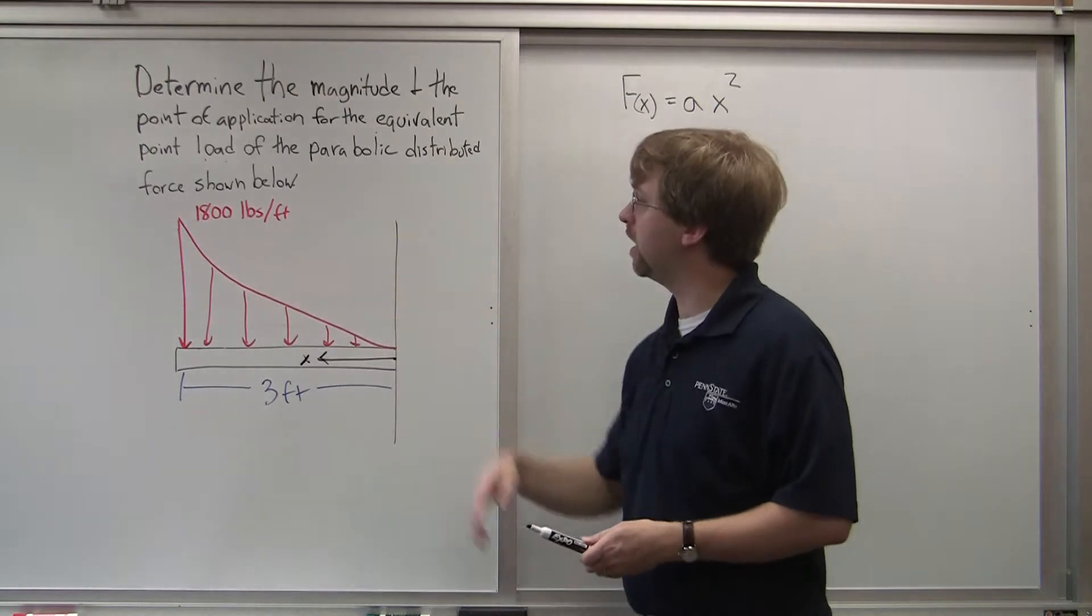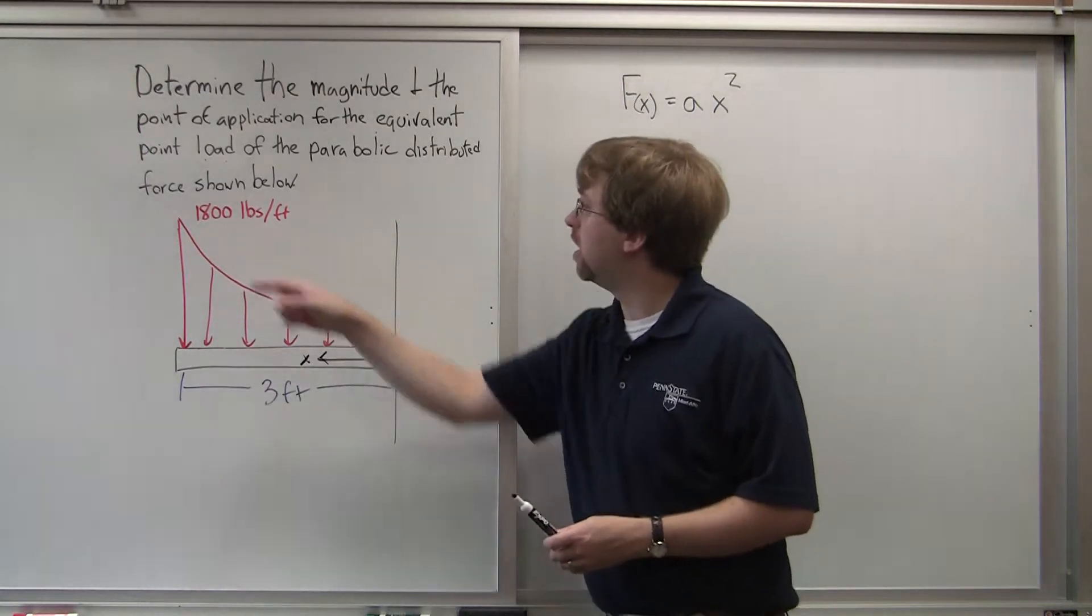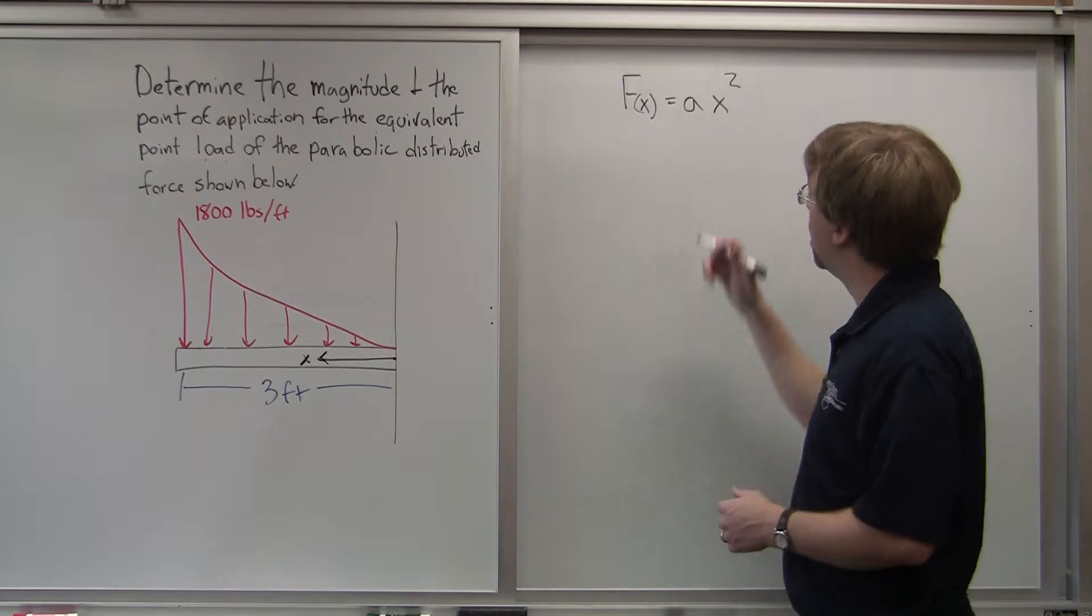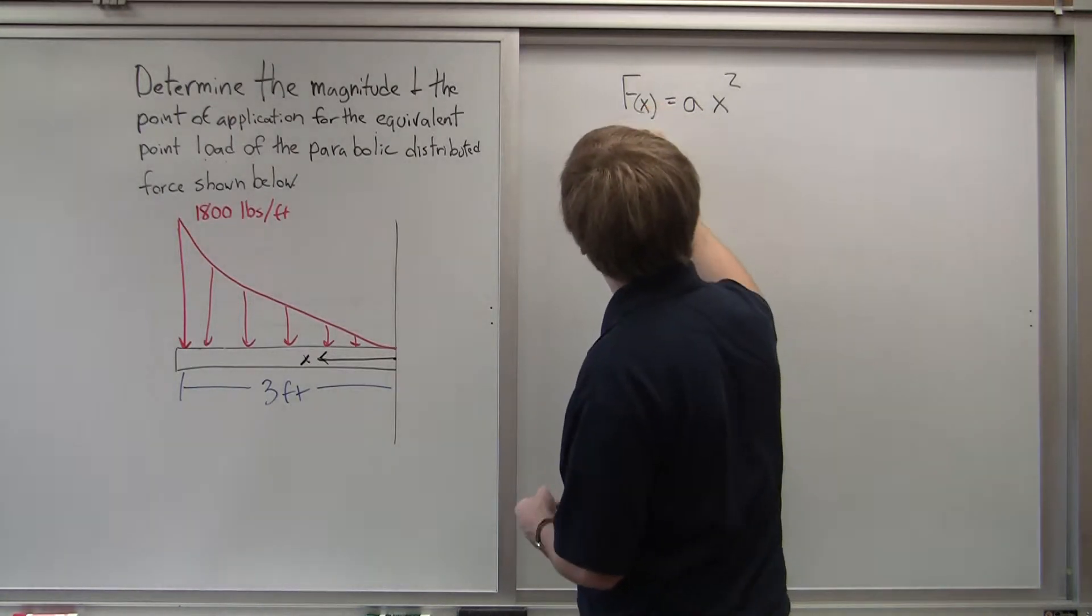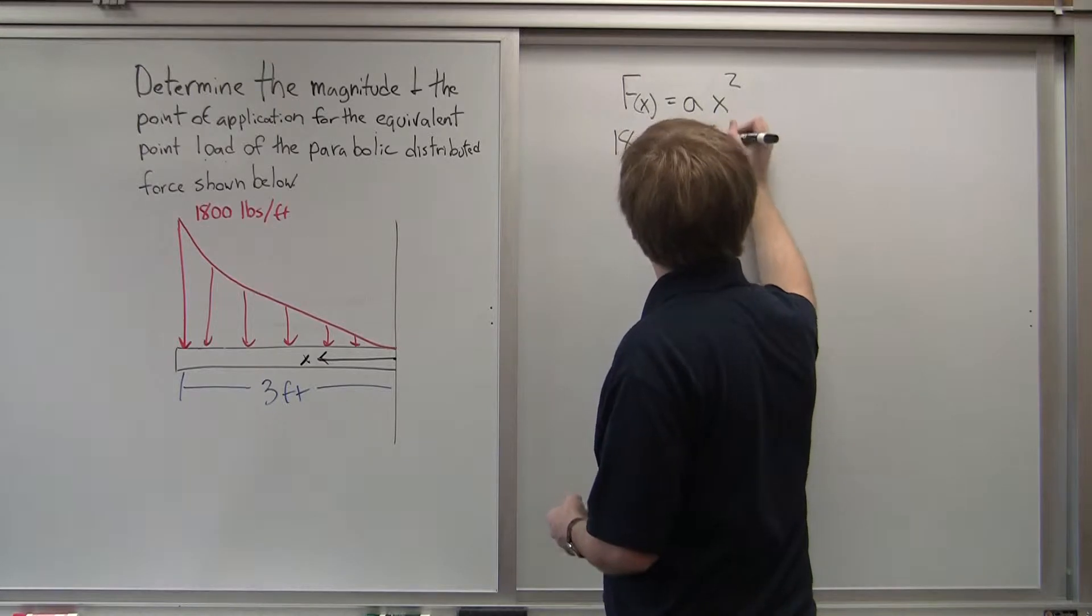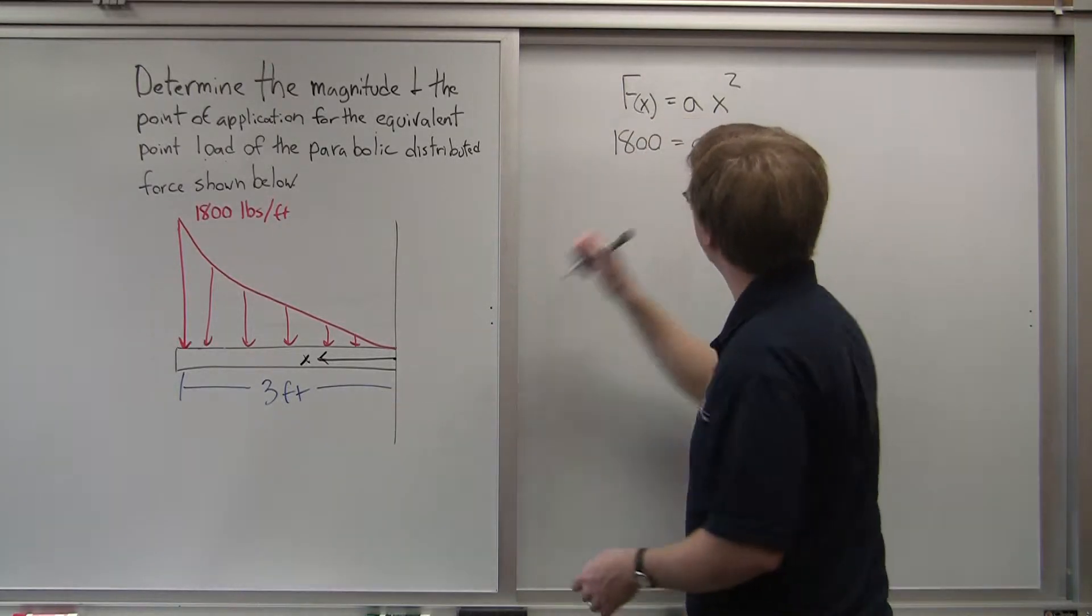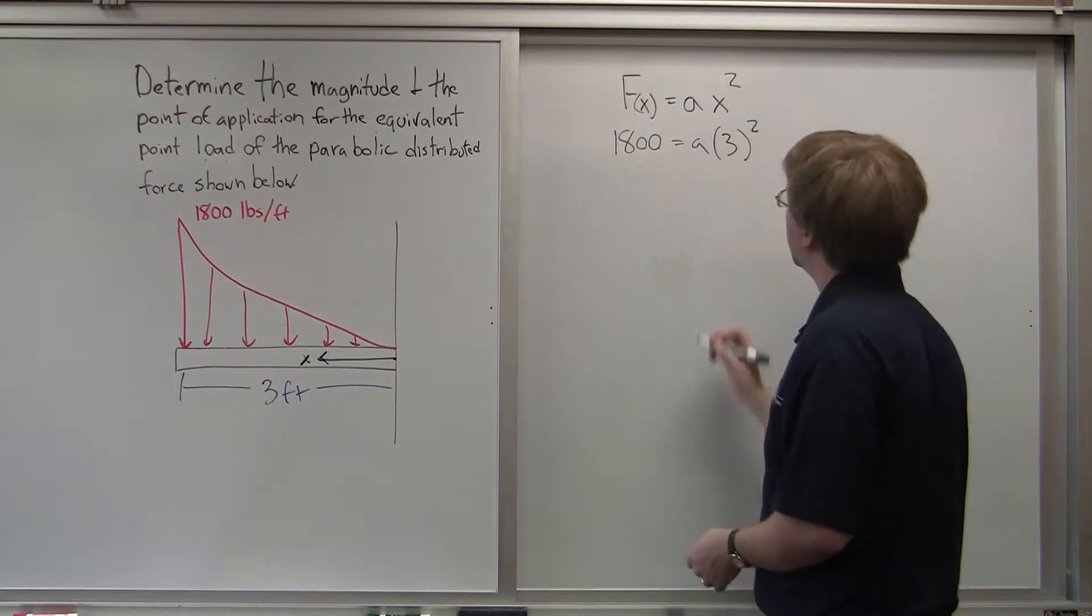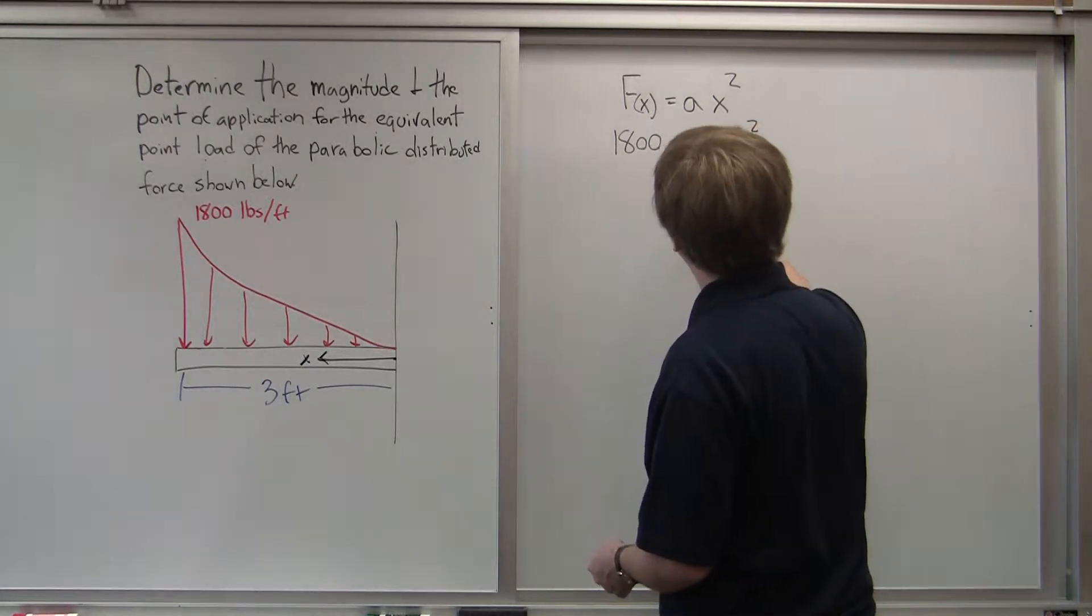And what's going to let me do that is I know at 3 feet out, I've got 1800 pounds per foot. So f of x is going to be 1800 equals a times 3 squared. And that gives me a is going to be 200.